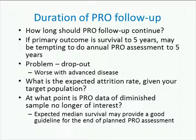Now let's think about the duration of PRO follow-up. If your primary outcome is survival and you're going out to five years, it might be tempting to do annual PRO assessments up to five years. However, you have the problem of dropout, which will be worse with advanced disease. It's often helpful to think about what your expected attrition rate will be given your patient population, and at what point PRO data will be so diminished that the sample is no longer of interest. A useful suggestion is to think about expected median survival as a guideline for ending your planned PRO assessment, because at that stage you're likely to have only 50% of the target sample you started with.